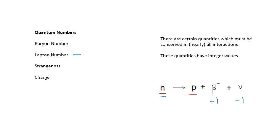There's no charge on the left-hand side. The proton has a charge of plus 1 electron. The beta minus has a charge of minus 1 electron. So charge is conserved as well. So this idea of quantum numbers, there's a list of things which have to say the same amount on either side of the equation.